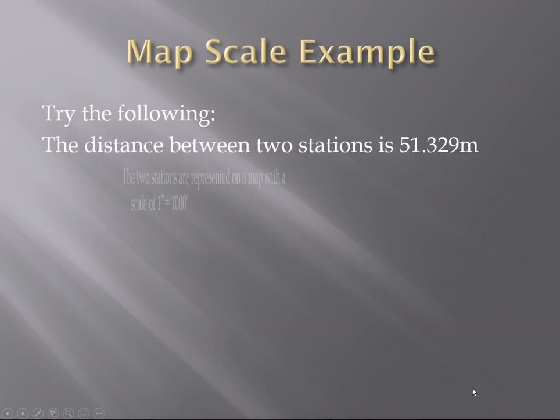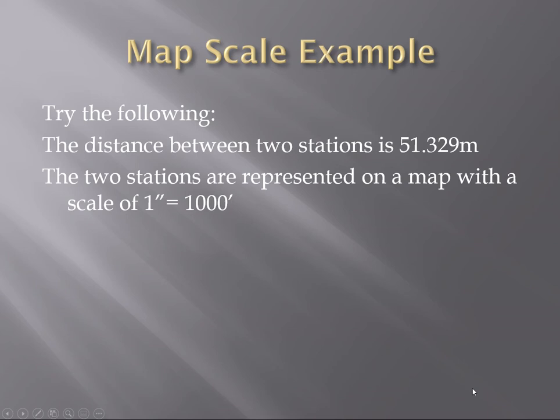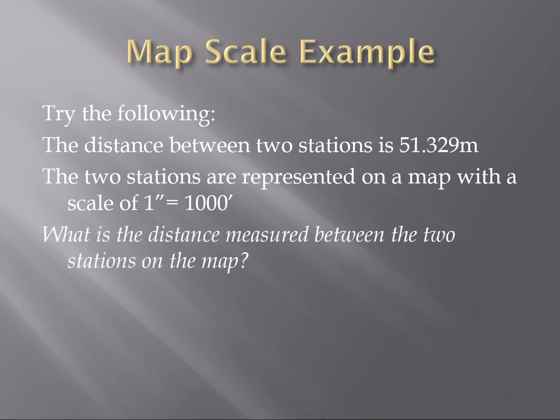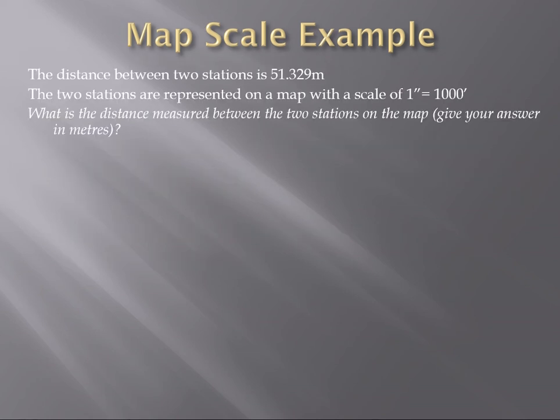So another example this is for you to try. We have a distance between two stations on the ground is 51.329 meters. The two stations are represented on a map with a scale of 1 inch to 1000 feet. So now you've got to do some other unit conversions. I would suggest pausing this video here and working that out and giving it a try. So what is the distance measured between the two stations on the map? We've got the ground distance. We've got the ratio. Now we need to figure out how big the map is.